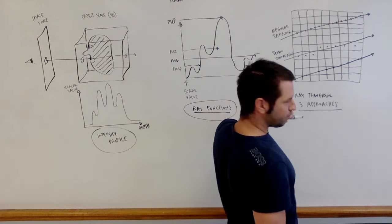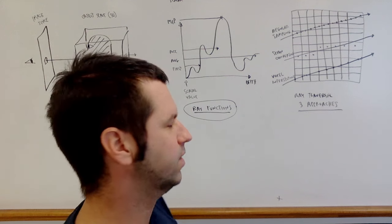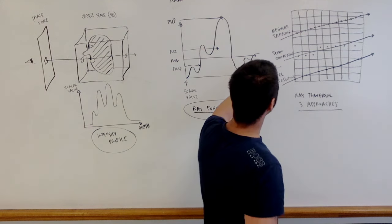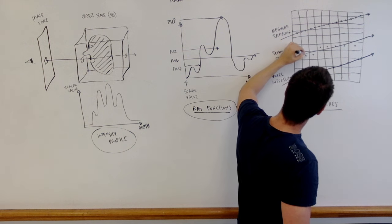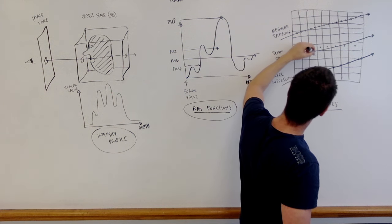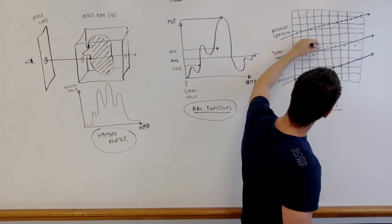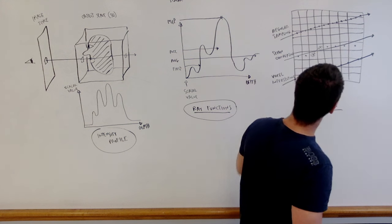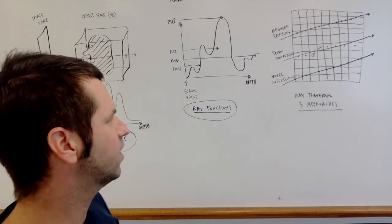The next one is the simplest and the fastest, but the least accurate. So we have a ray, it enters a voxel, and we simply take the value at the center of the voxel every time. So we first take the value at the center of this voxel, then the center of this voxel, and so on. And notice there's a big gap between these two samples. So it's quick, it doesn't require interpolation, but it's the least accurate.